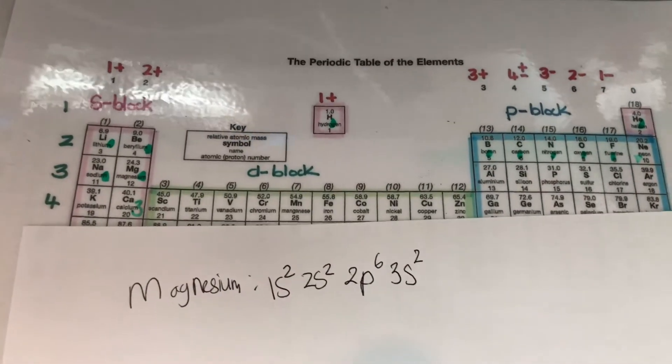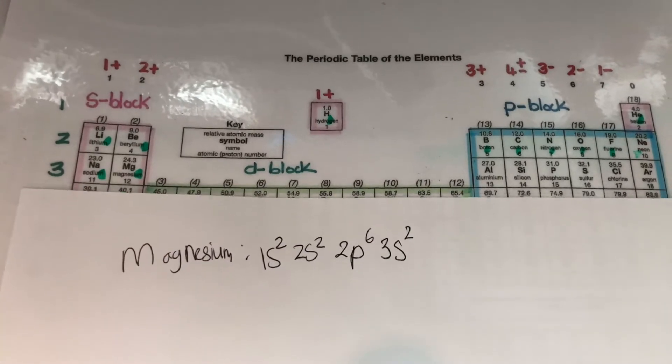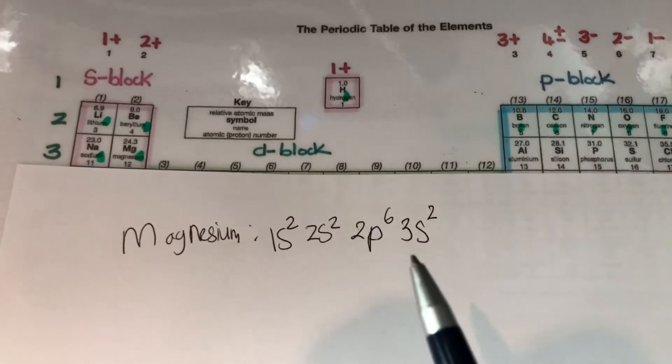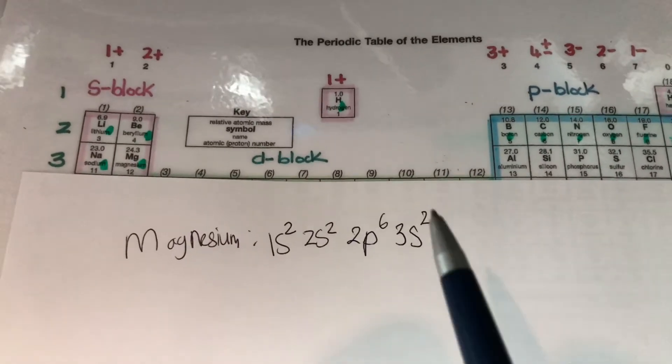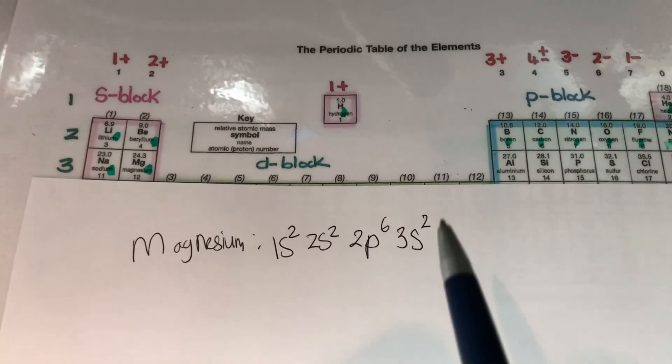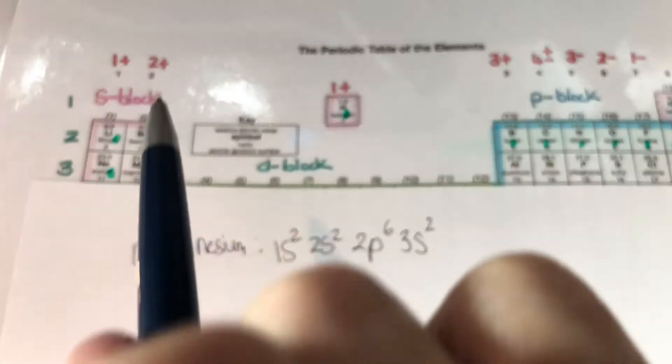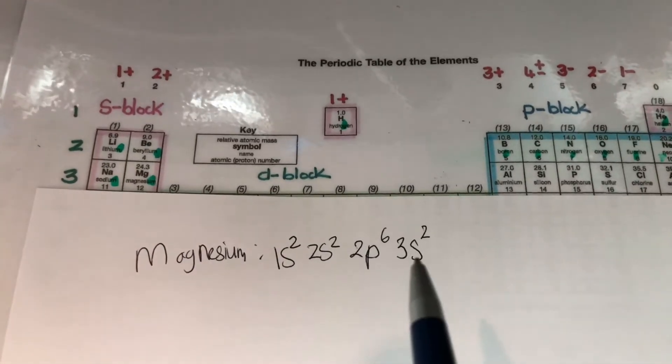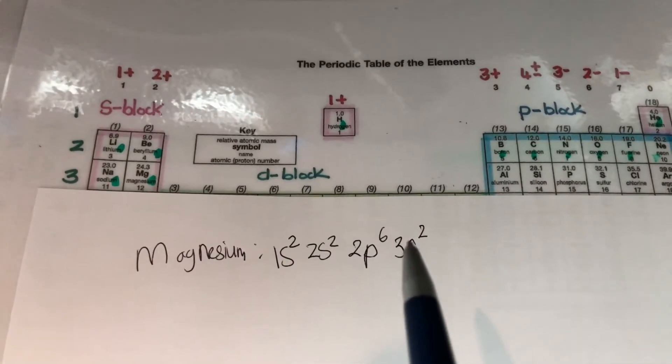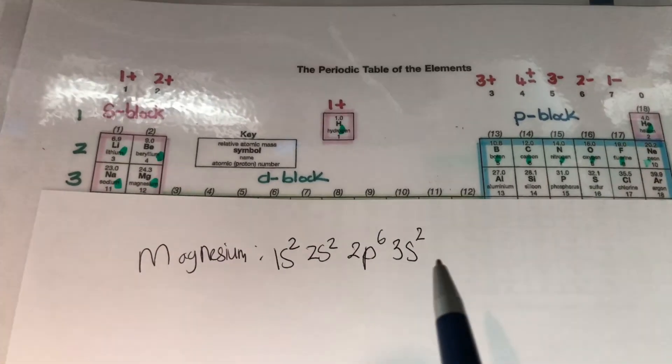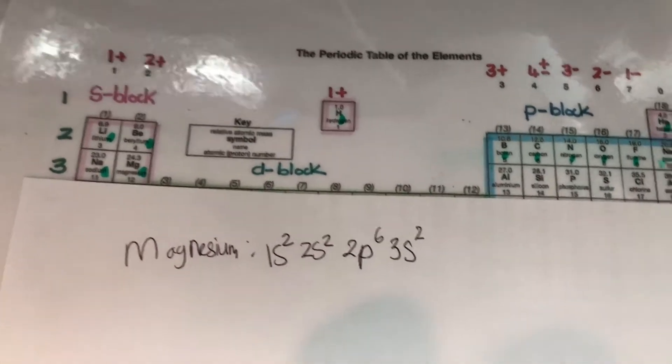Now when you look at this you can also see that this is the reason why this element has been placed in group 2 because it's got two electrons in the highest energy level. Highest energy level is level 3. There's two electrons in it and that's why magnesium is in group 2. And then you can also see that it's an S block element because it lies in the S block. So that's why it's 3S2.